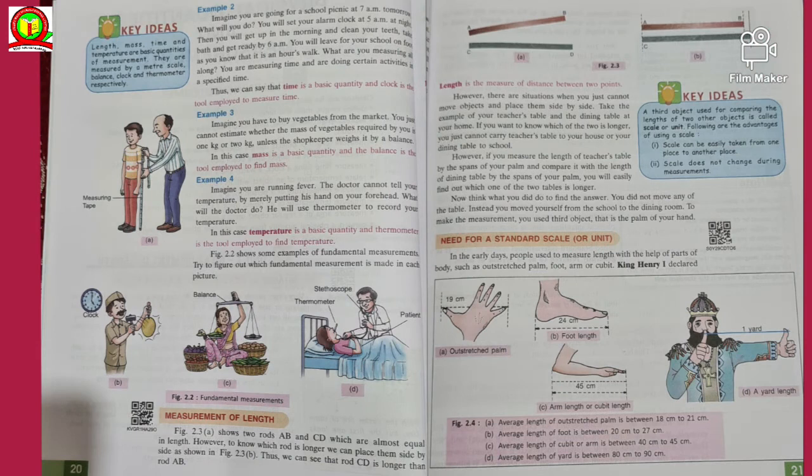Here are some more examples related to time and there is a blue box. Length, mass, time, and temperature are basic quantities of measurement. They are measured by a meter scale, balance, clock, and thermometer respectively. So length is measured by meter scale, mass with a balance, time with a clock, and temperature with the thermometer. Time is a basic quantity and clock is the tool employed to measure time. Mass is a basic quantity and the balance is the tool employed to find mass. Temperature is a basic quantity and thermometer is the tool employed to find temperature.